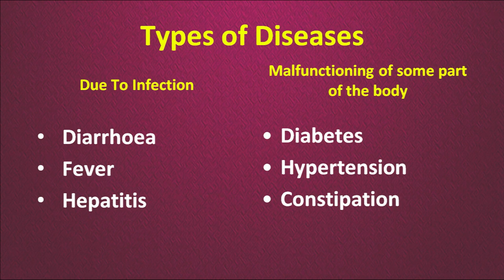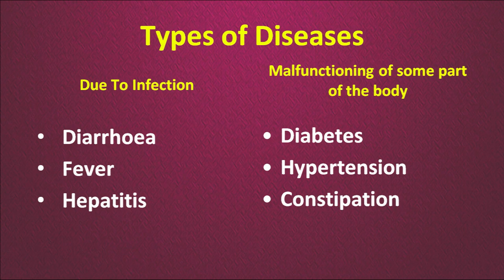Now we will talk about different types of changes for different types of diseases. We will focus on certain kinds of diseases — those during infection and due to malfunctioning of some parts of the body. During infection we have selected diarrhea, fever and hepatitis. For body malfunctioning we have selected diabetes, hypertension and constipation.